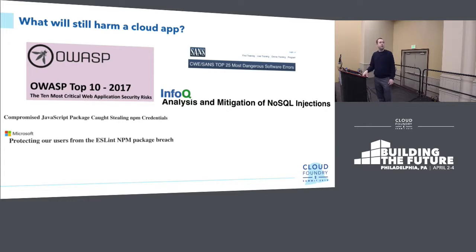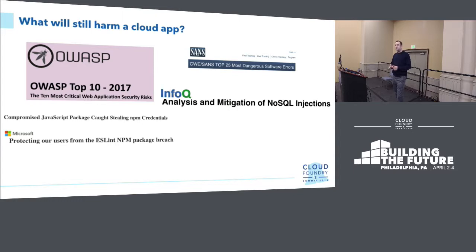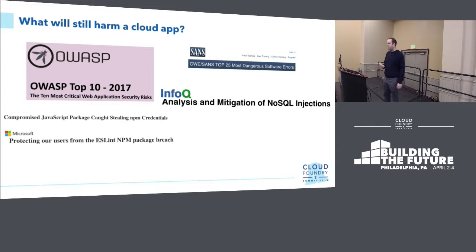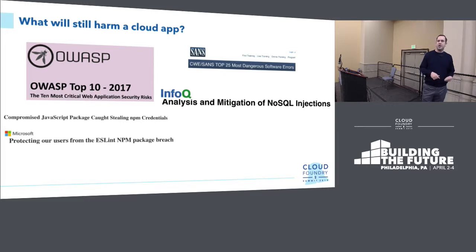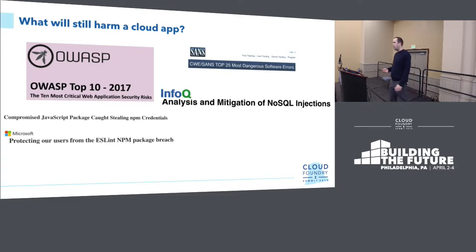What will harm a cloud application is really the same thing that harms any on-premise application. OWASP — the Open Web Application Security Project — maintains the top 10 security vulnerabilities: an analysis of flaws people use to break into applications, including injection flaws, buffer overflows, and misconfigurations. SANS maintains the top 25 issues. In this case, we have mitigations of SQL and NoSQL injections — I can't just watch a Mongo database for SQL injection because the syntax is different and I'll never find them.